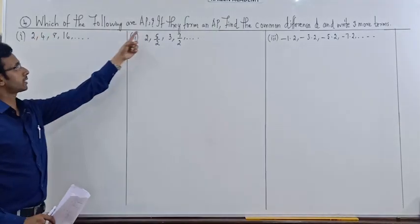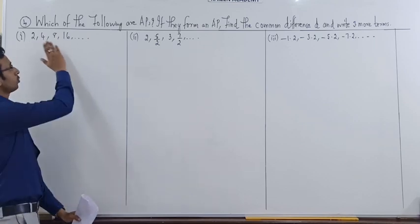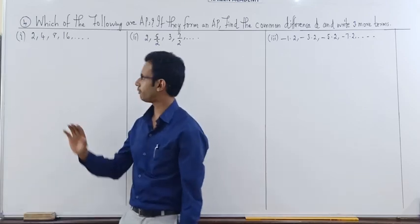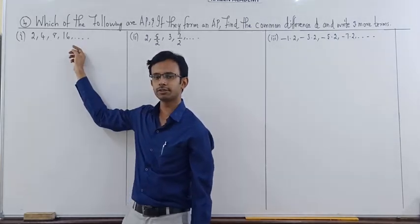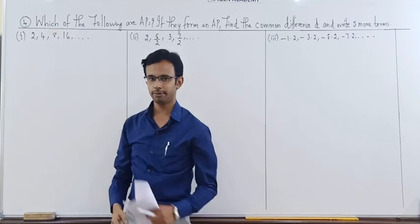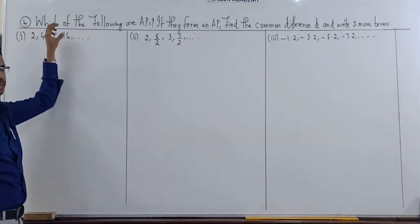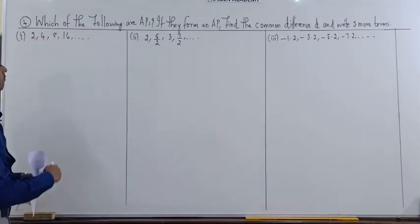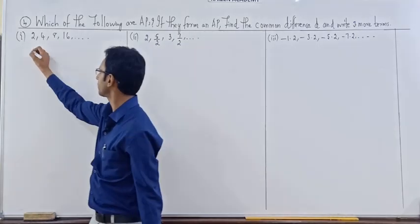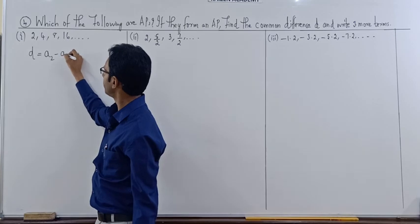The first question asks us to check whether the following are APs. In the last session I discussed how to verify whether it is an arithmetic progression or not. You need to check whether the common difference is the same or not. If the common difference in the terms is the same, then we say it forms an arithmetic progression; if not, they are not in AP. The first problem given to us is 2, 4, 8, 16, and so on.